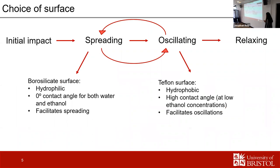This led me to optimize the system with two separate experiments: spreading experiments and oscillating experiments. For the spreading experiments, I use a borosilicate hydrophilic surface, which gives a zero-degree contact angle for both water and ethanol, facilitating spreading. For the oscillation experiments, I use the opposite — a Teflon hydrophobic surface — which gives a high contact angle and facilitates those oscillations.